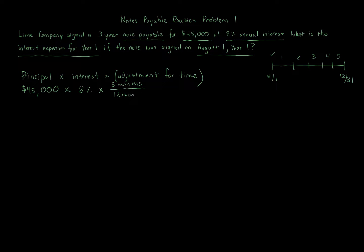If the note had been issued on January 1st, it would be twelve months over twelve months. So the calculation is: 45,000 times eight percent times five over twelve, which equals fifteen hundred dollars.